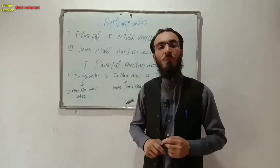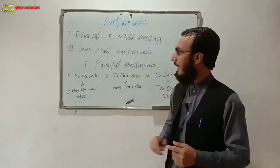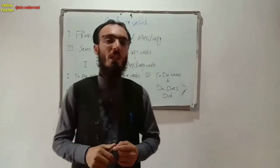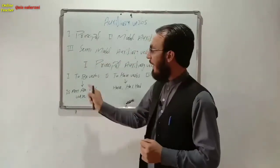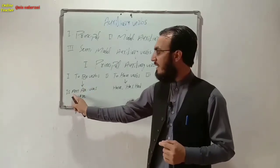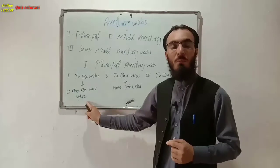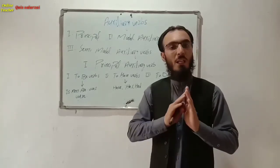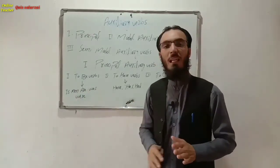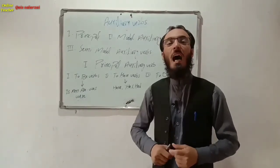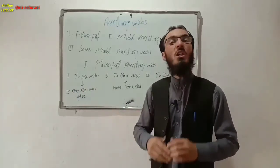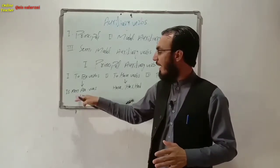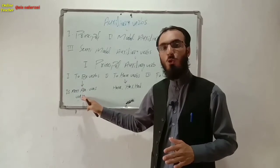Principal auxiliary verbs are divided into three types: to be verbs, to have verbs, and to do verbs. The to be verbs are mainly five in English: is, am, are, was, and were. These to be verbs are only used to show state in a sentence — when there is no action verb. For example: you are a boy, she is a girl, I was in the class, we were in the class.